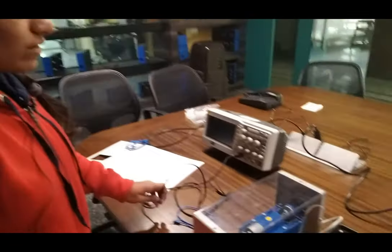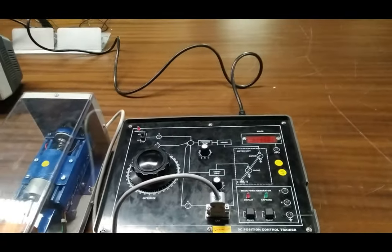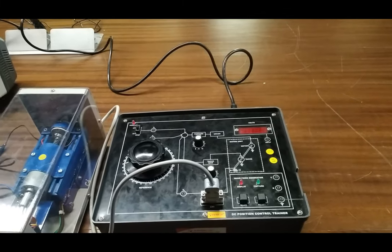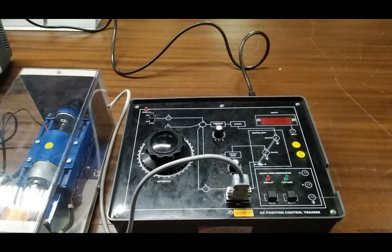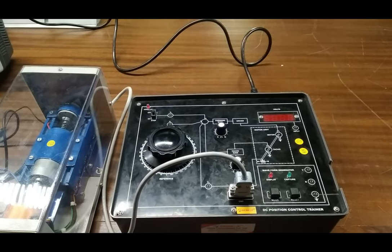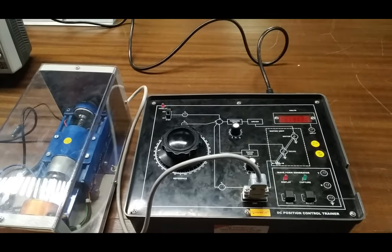Today we are going to perform an experiment on a DC position control trainer. Our first experiment is to check the output waveform of the DC position control system. For this, we are taking the kit and the digital oscilloscope.